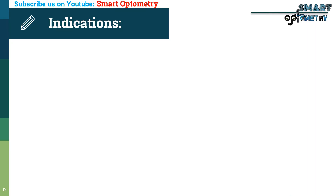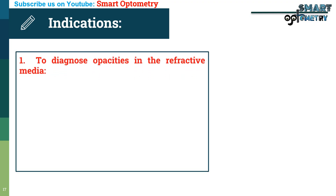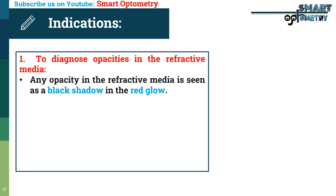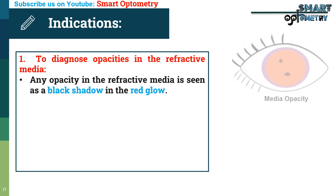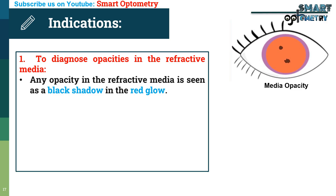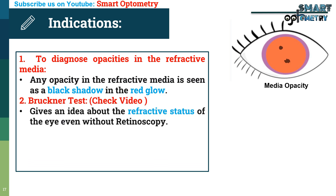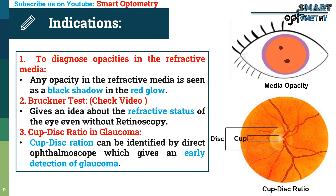Indications of the direct ophthalmoscope: 1. To diagnose opacities in refractive media — any opacity in the refractive media is seen as a black shadow in the red reflex. 2. Bruckner test: gives an idea about the refractive status of the eye even without retinoscopy. We have already prepared videos on the Bruckner test; the link is available in the description box. 3. Cup-disc ratio in glaucoma: the cup-disc ratio can be identified by direct ophthalmoscope, which gives early detection of glaucoma.